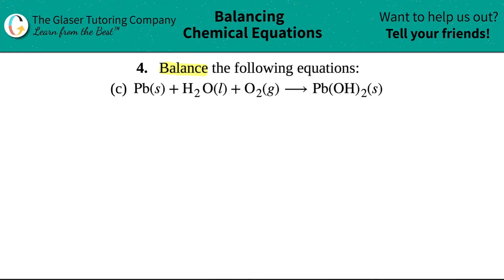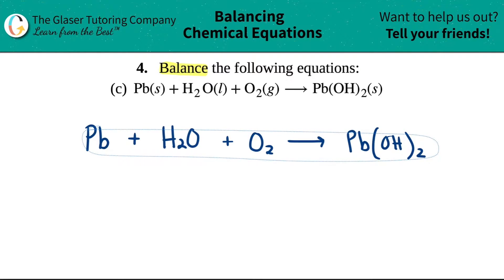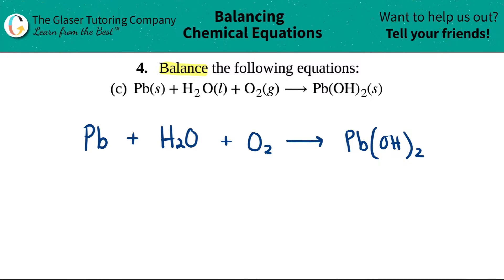I'm just going to rewrite the equation because they really didn't give me a lot of room to write down what I need. So I'm rewriting this: Pb plus H2O plus O2 will yield or produce Pb(OH)2. Let's just center this because we like everything nice and neat.